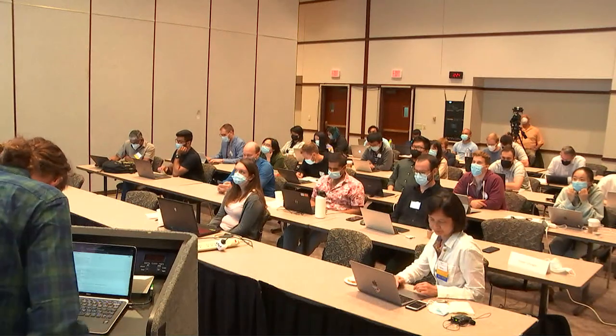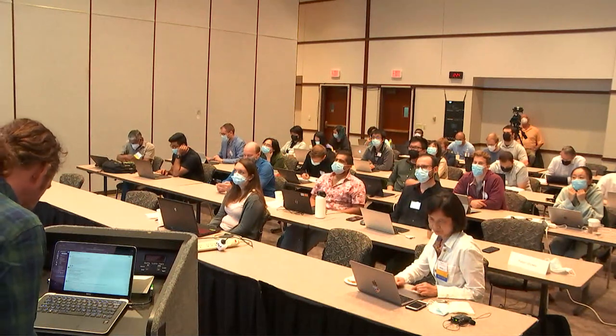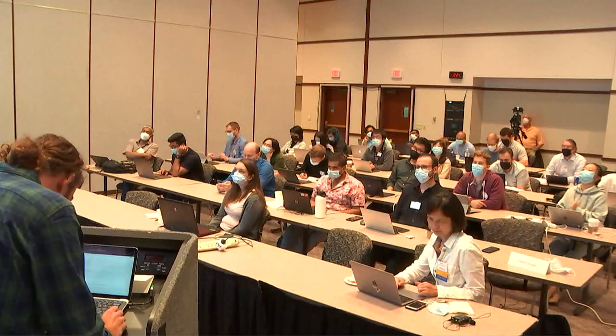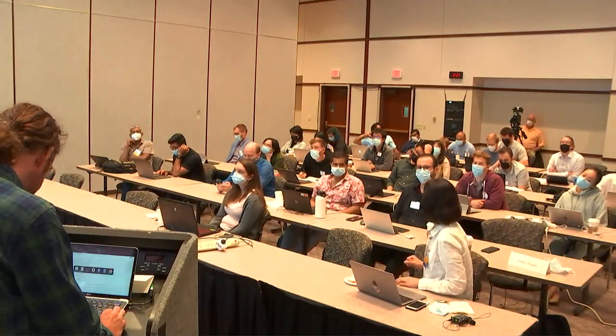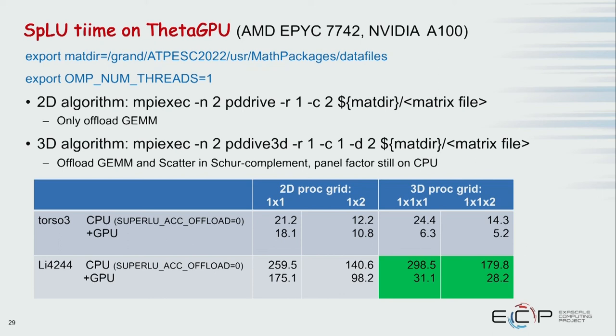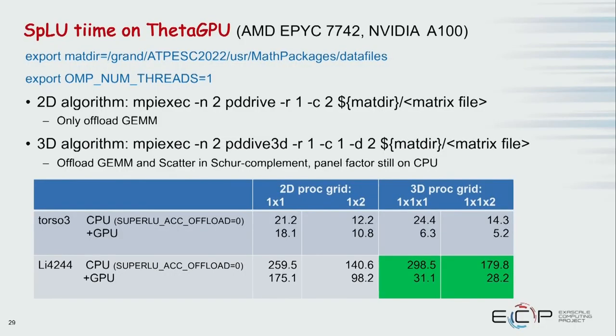A question about when the 3D processor grid is useful: the 3D algorithm has higher complexity, so for small scale there's no benefit. It's really for strong scaling at large process counts — maybe 30 or more processes before you see benefit. Across the board, the single-process 1×1 case is worse for 3D than 2D, and 1×2 is also worse than 1×1×2, which confirms the 3D algorithm is only beneficial at large scale where communication reduction matters.